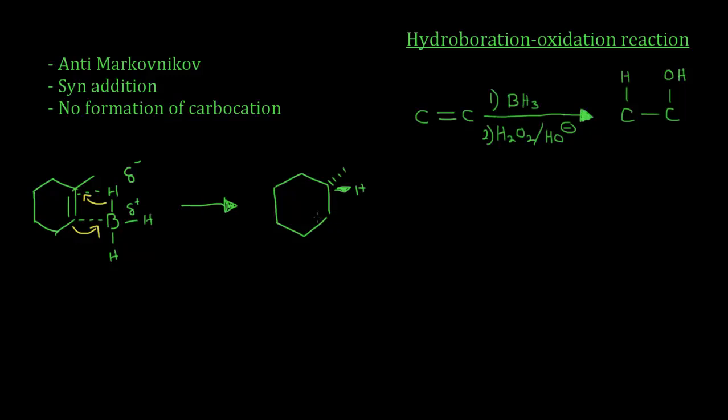And remember, since it's syn addition, this boron and this hydrogen both came from the top, so the BH2 will become wedged as well. So this is the product of this first step. Now what does this tell us?